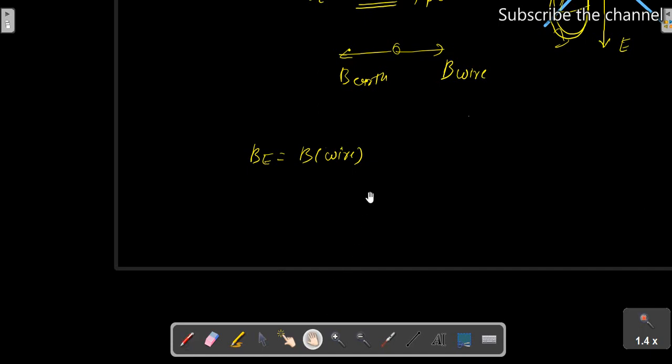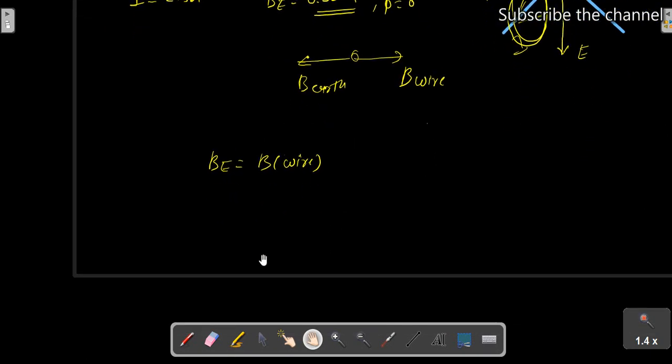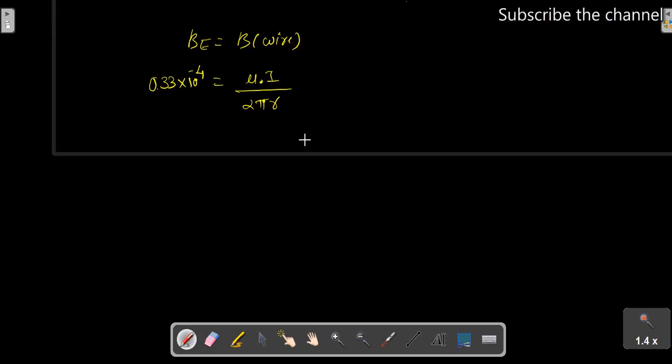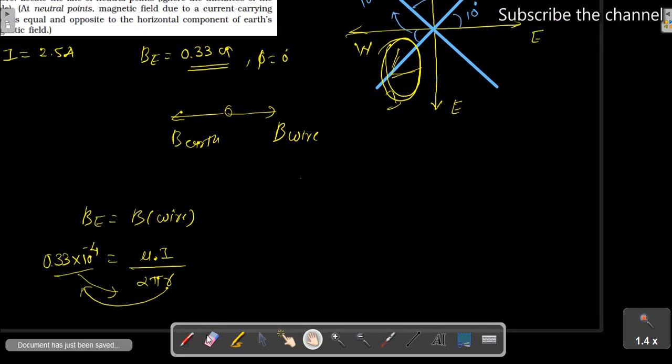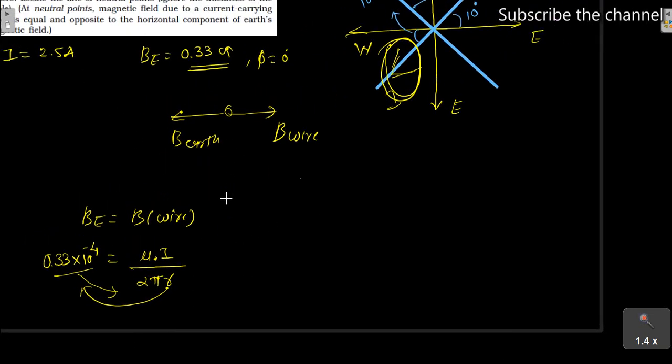So here the field is given as 0.33 Gauss, which is 0.33 times 10 to the power minus 4. This will be mu0 I upon 2 pi R. If you want to calculate R, this thing will go down and this will go up. So let's simplify it. R will go up.